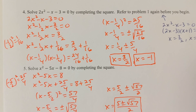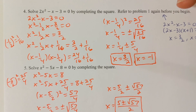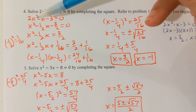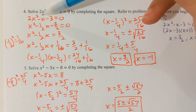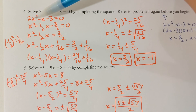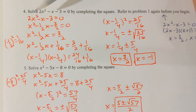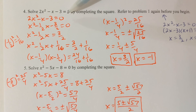To begin completing the square, we need to have a 1 in front of the x² term. Right now I've got a 2, so I'd want to begin by dividing both sides by 2 — dividing the three terms here by 2.